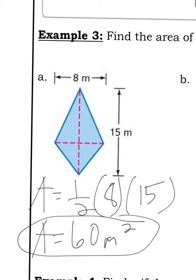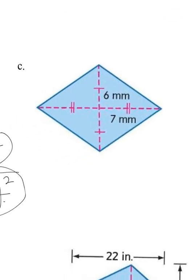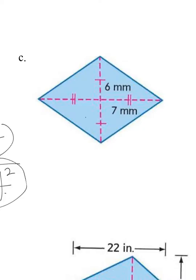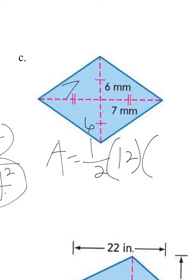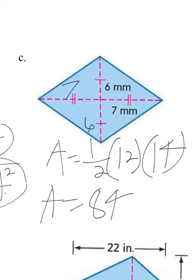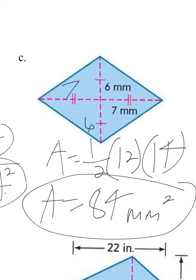Looking at example C now. I'm given 6 at the top, so 6 is the bottom half, and 7 is the right half, so 7 is the left half. Area equals one half times 12—that's 6 plus 6—times 14—that's 7 plus 7. That's going to leave me with 84 square millimeters. So that's pretty much all there is to it using that formula.